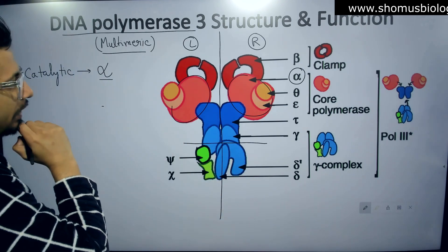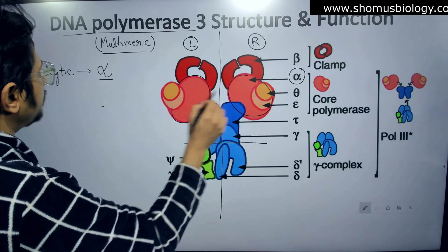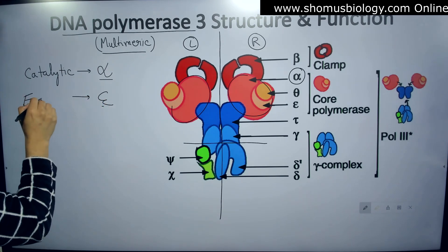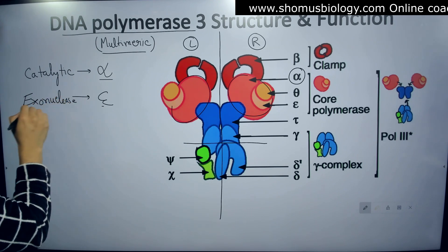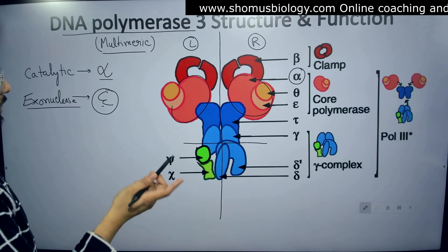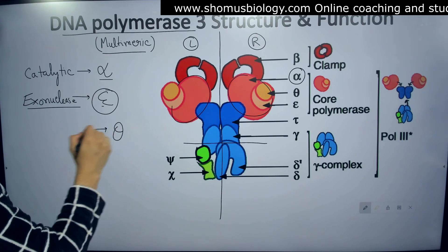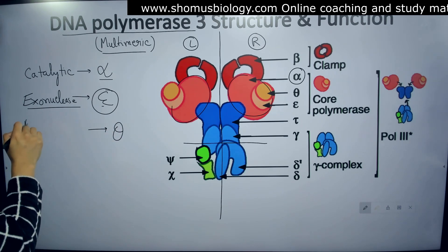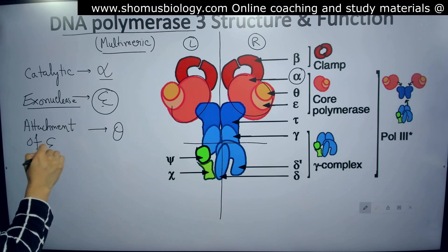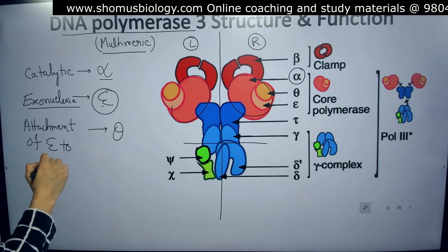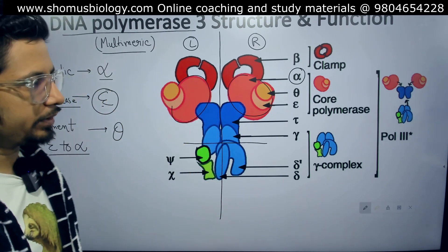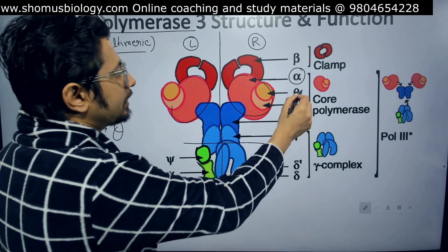The catalytic subunit is alpha. Within the alpha subunit, there are two associated subunits: theta and epsilon. Epsilon is the exonuclease or proofreading unit. Epsilon is attached to the alpha unit by theta, so theta helps in the attachment of epsilon to alpha. This engagement of epsilon to the alpha unit is very important and is mediated by theta.